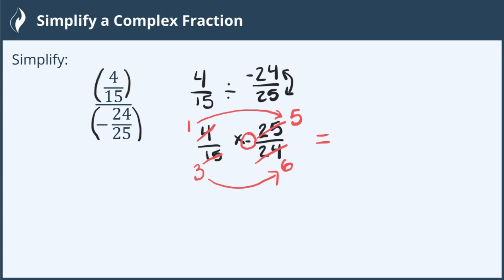So I get 1 times negative 5 is negative 5. And on the bottom 3 times 6 gives me 18. And this is simplified before I did the multiplication.